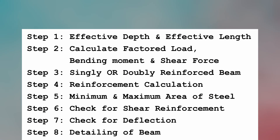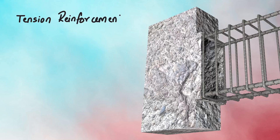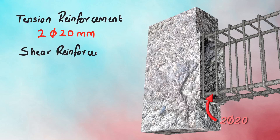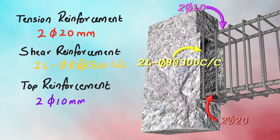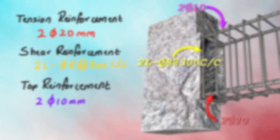The final step is to detail the beam. From our calculations, the main tensile reinforcement is 2 Tor-20, shear reinforcement is 2-legged Tor-8 at 300 mm center-to-center, and additional top reinforcement is provided as 2 bars of 10 mm diameter to tie the stirrups. With this, the design of the singly reinforced beam is complete. You can continue watching the RCC design series for more.